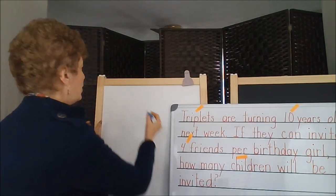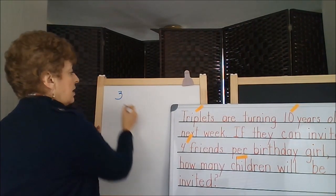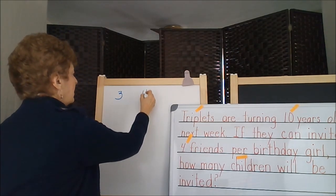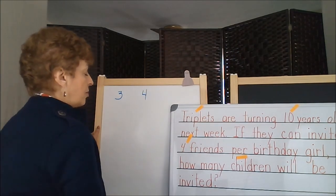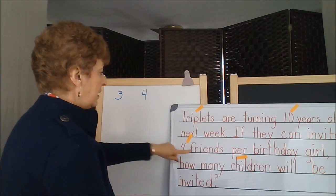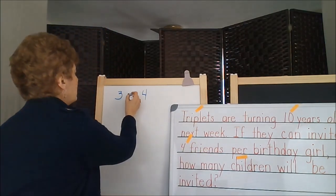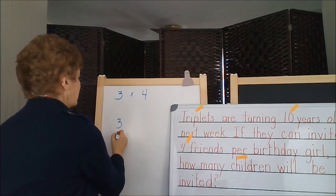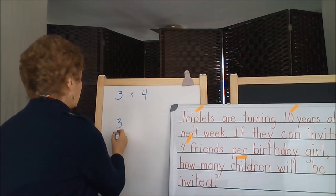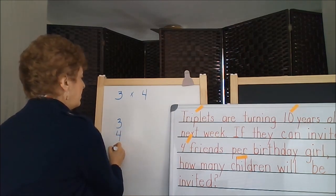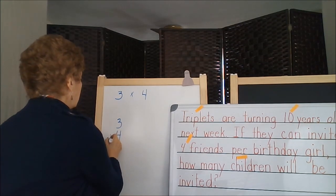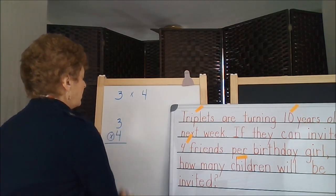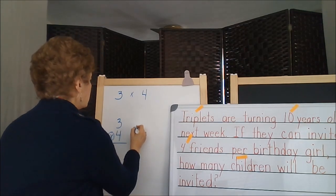Triplets suggest three; four friends are people. The operation of multiplication seems to be indicated here. So three triplets — those are the birthday girls — and they can each invite four friends. So our clue for multiplication is the word 'per.'